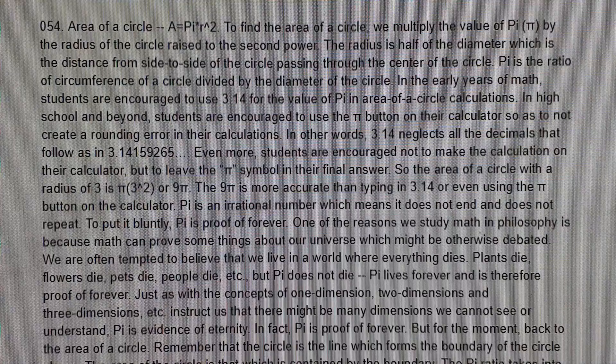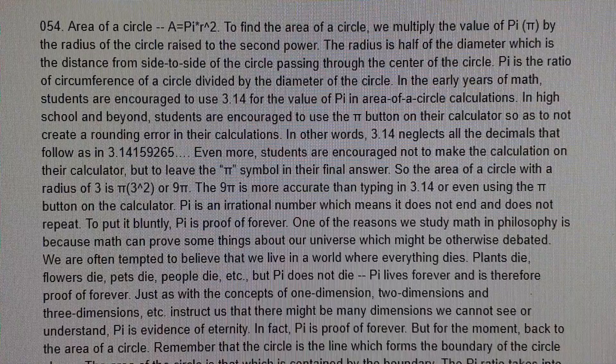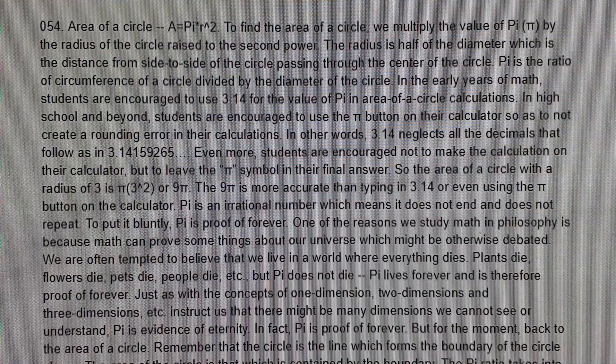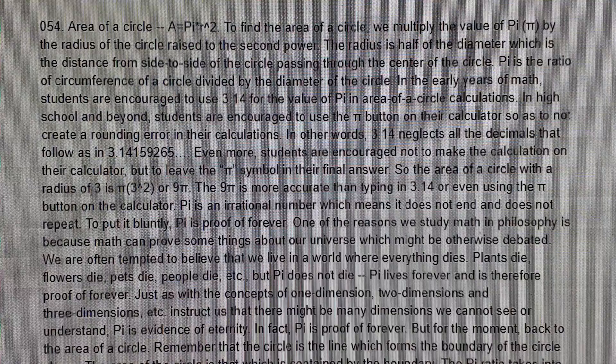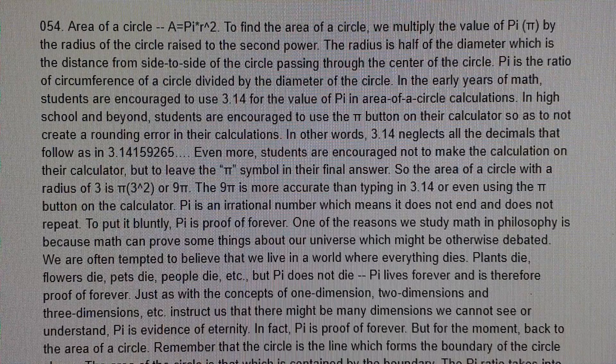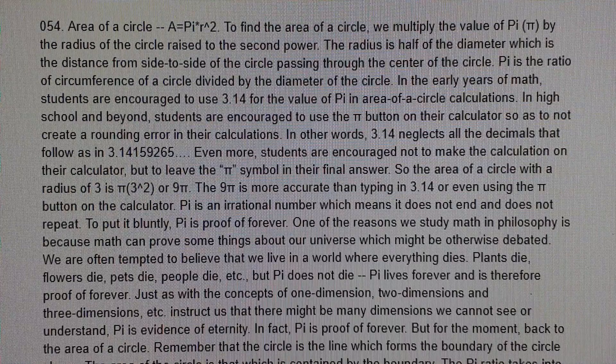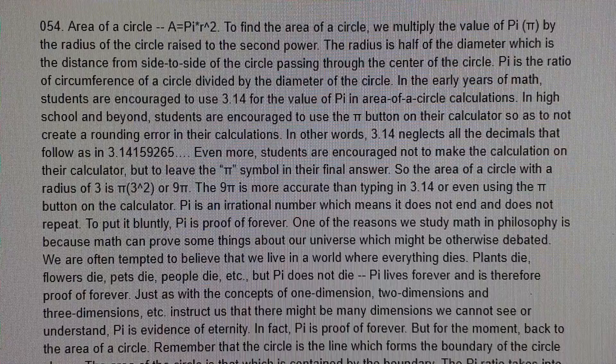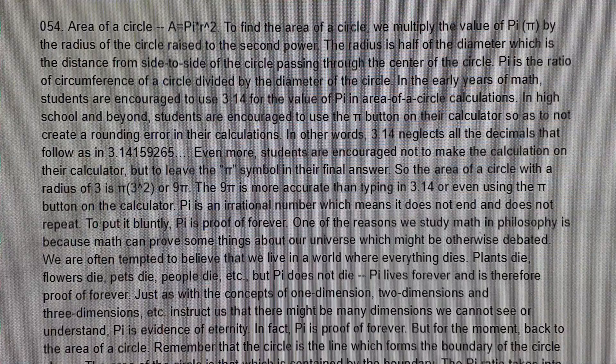But for the moment, back to the area of a circle. Remember that the circle is the line which forms the boundary of the circle shape. The area of the circle is that which is contained by the boundary. The pi ratio takes into account the distance around the circle and the distance across the center of the circle and multiplies it by the radius raised to the power 2.